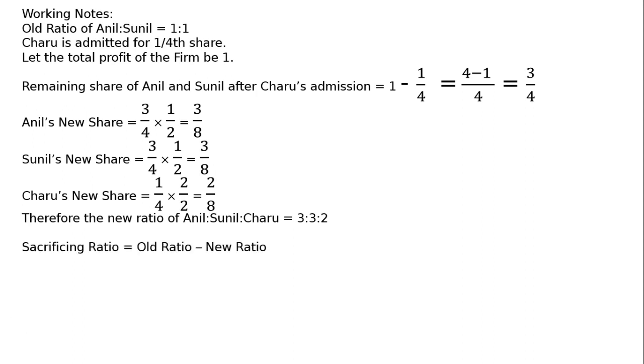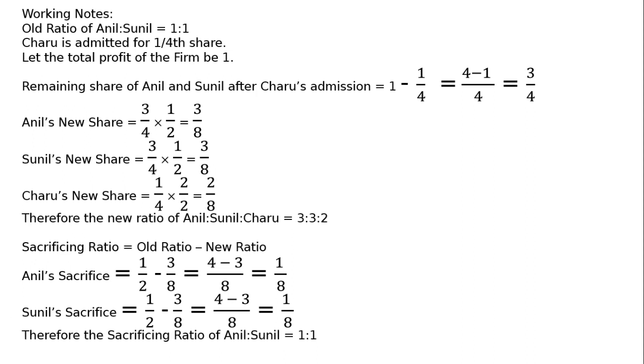Sacrificing ratio is equal to old ratio minus new ratio. Anil's sacrifice: 1/2 minus 3/8. LCM is equal to 8. Numerator is equal to 4 minus 3 is equal to 1 upon 8. Sunil is the same calculation, 1 upon 8. Therefore sacrificing ratio of Anil is to Sunil is equal to 1 is to 1. So our sacrificing ratio is equal to 1:1. This means we will make goodwill treatment. If Charu doesn't bring the money, then we will make premium need but capital shares contributed, so we will debit the capital account. We will do Charu's capital account debited to Anil's and Sunil's capital accounts and that sacrificing ratio will be distributed.